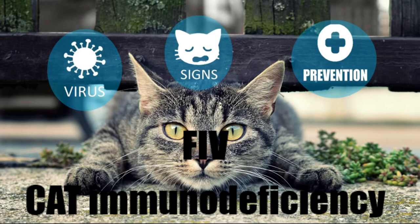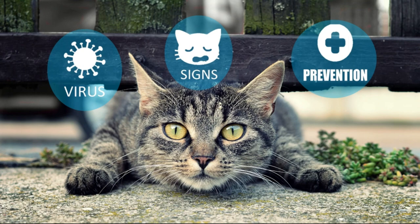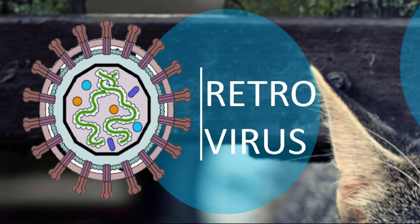FIV — Feline Immunodeficiency Virus, also known as Feline AIDS — belongs to the same family of viruses as feline leukemia virus, meaning they both belong to the Retroviridae family. This family is characterized by being an RNA virus that presents an envelope.